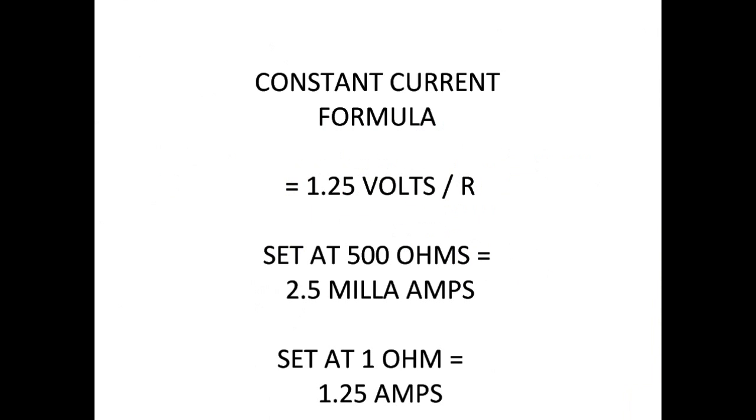Now the first LM317 chip in this series on the top row is going to determine our constant current. Now the constant current is determined by the reference voltage divided by R. So basically with the 500 ohm variable resistor at 25 turns, we'll have a very fine adjustment anywhere between 2.5 milliamps to 1.25 amps.